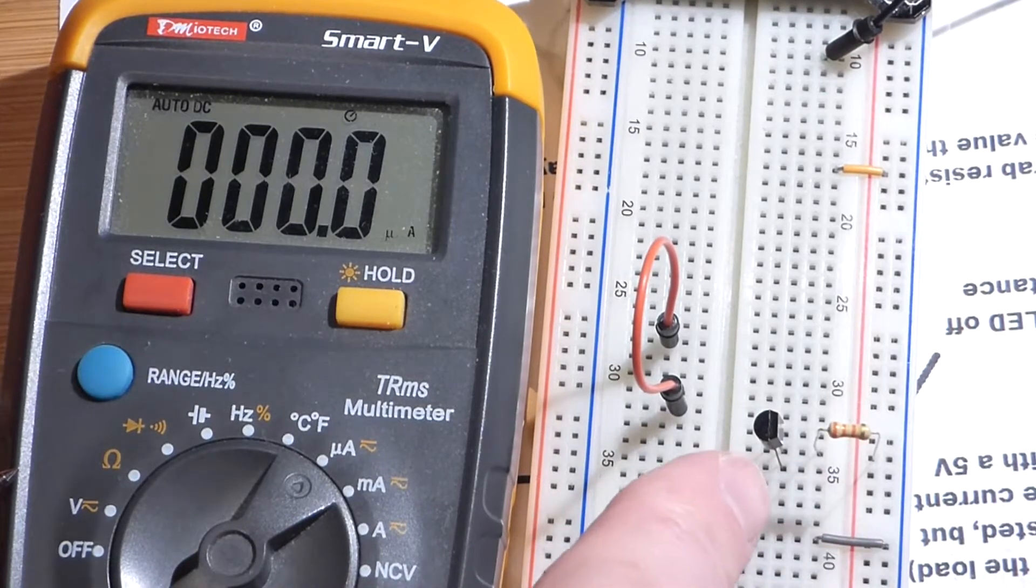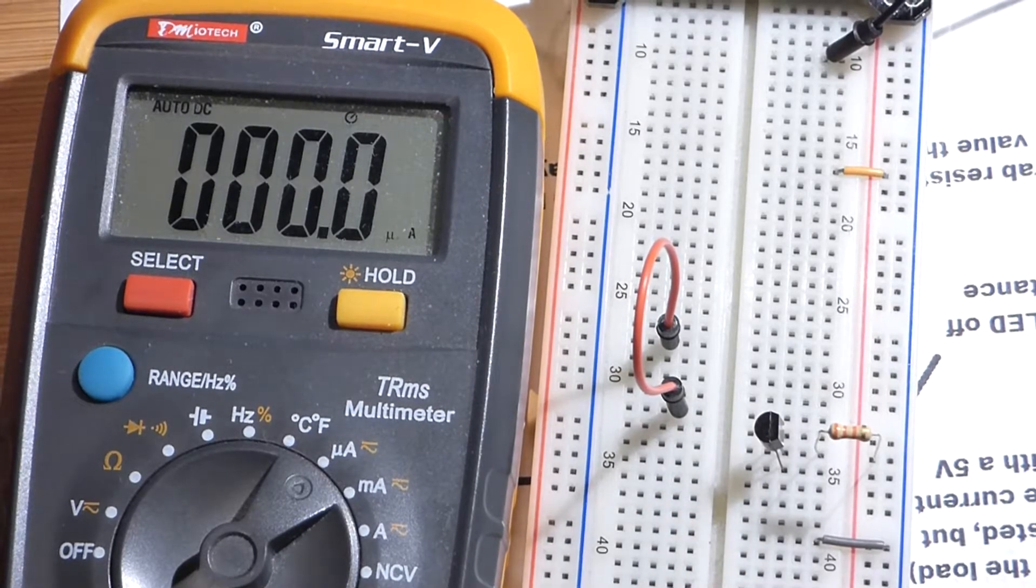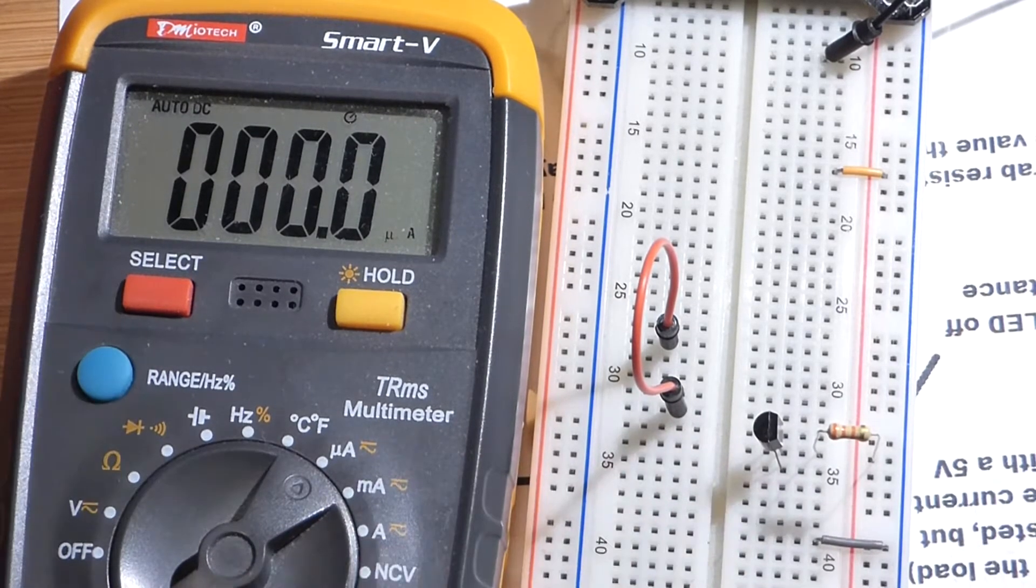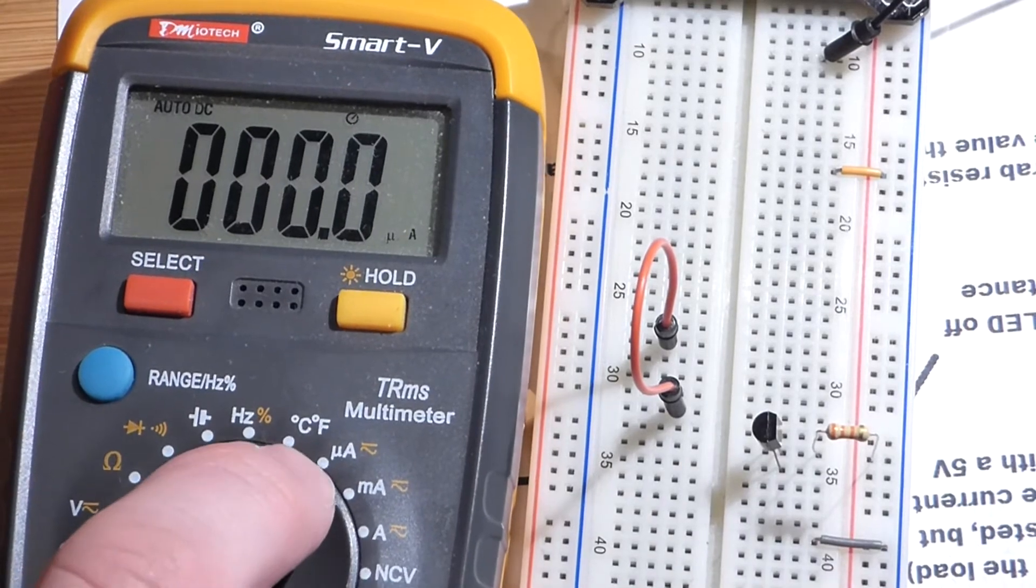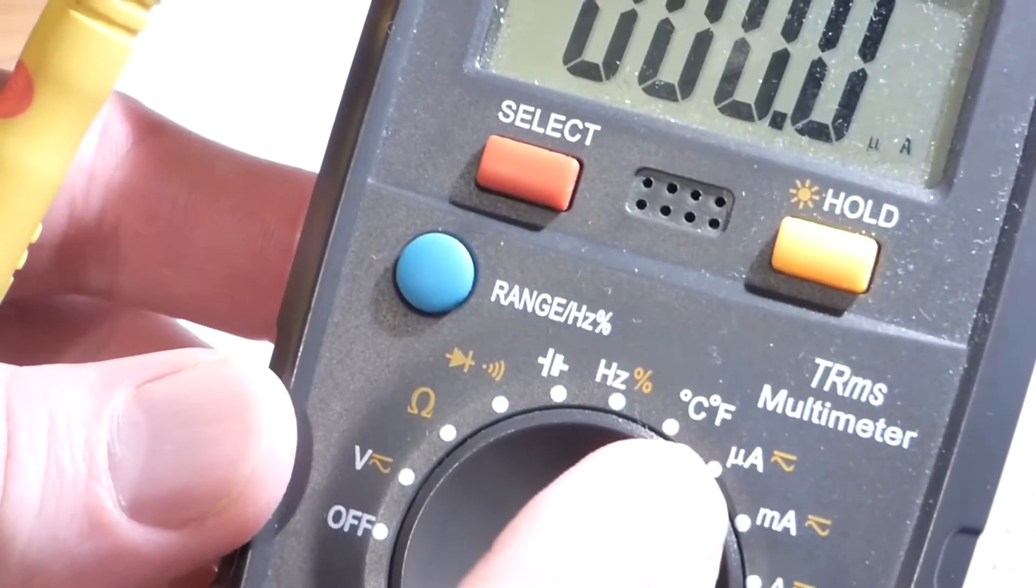We're going to have current coming to the base of the transistor. It's got to go to the emitter, so we're going to lose about 0.7 volts in the process. We're going to measure micro-amps. Micro is indicated by the Greek letter mu.